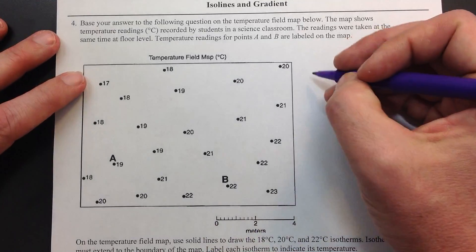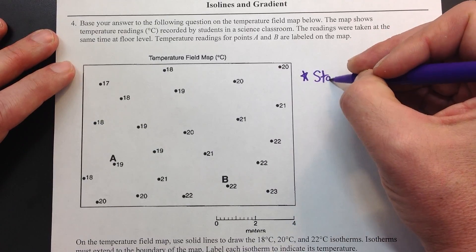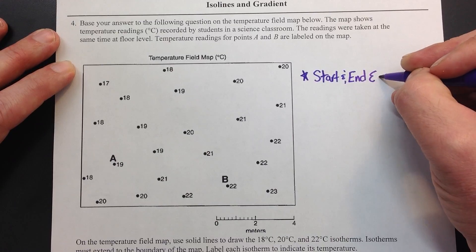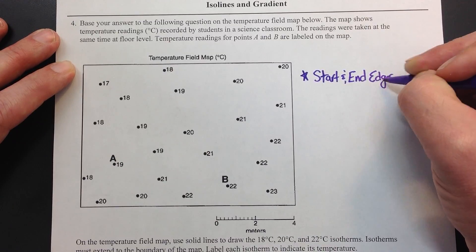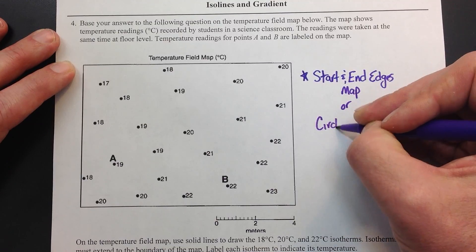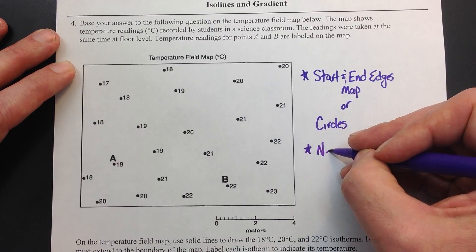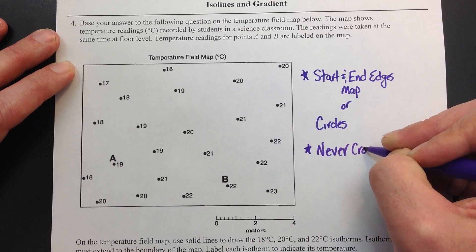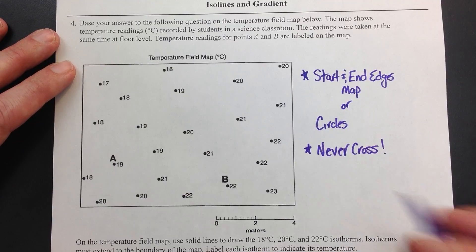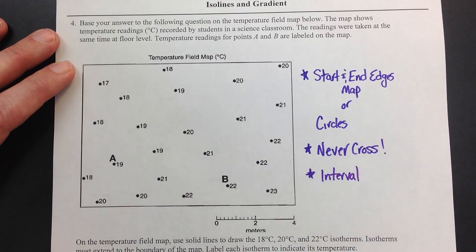Whenever you have an ISO line, there are a couple of rules you have to make sure of. They will either start and end at the edges of the map, or they will make circles around each other. The other thing is they never cross — you can't have two values in the same spot at the same time. And the key here is the interval: look at what points you're going through and connecting.